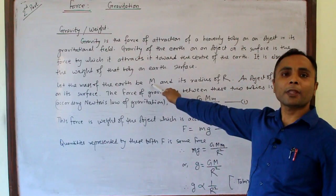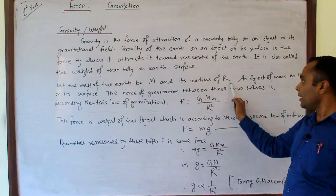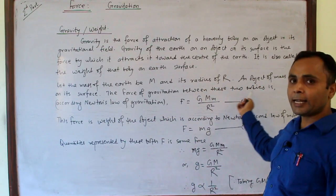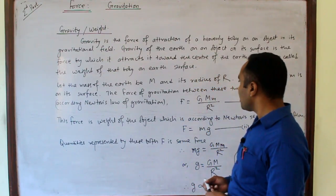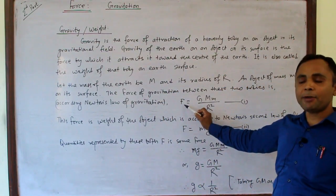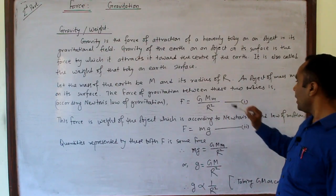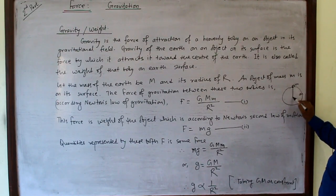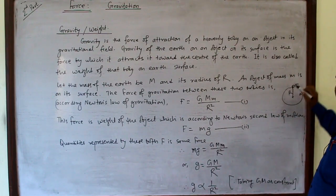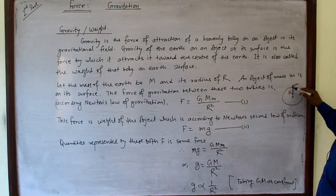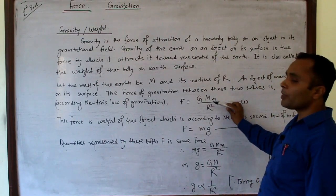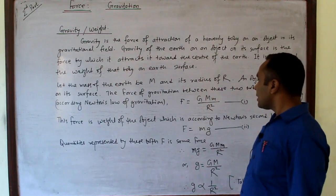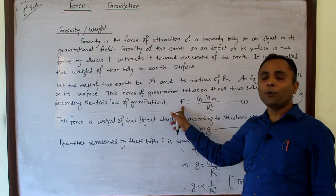Let the mass of the earth be represented by M and its radius by R, and an object of mass m is on its surface. Then the force of gravitation between the small mass m and the earth, according to Newton's law of gravitation, is F = GmM/R². The distance between their centers is the radius R because the radius of the small mass is insignificant compared to the radius of the earth. This force is the attraction force applied on the object due to the earth, which is in fact the weight of the object.